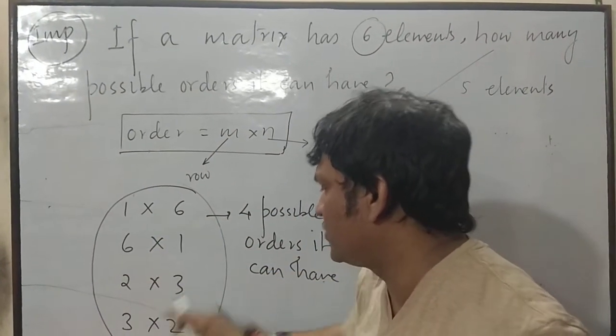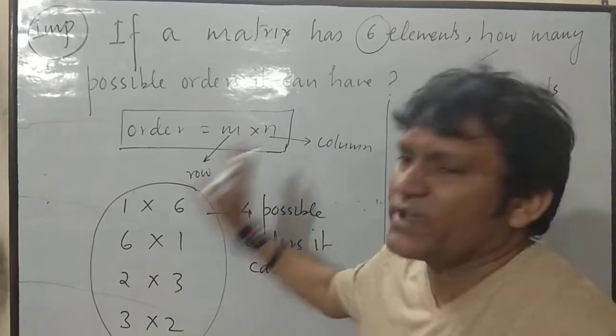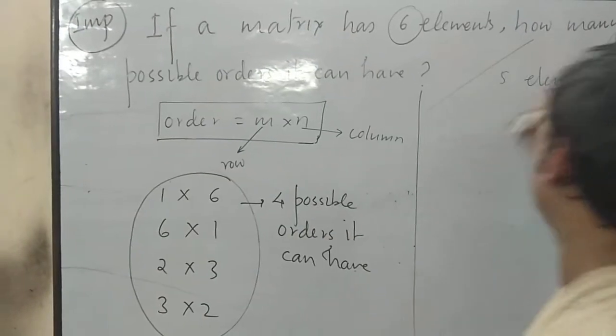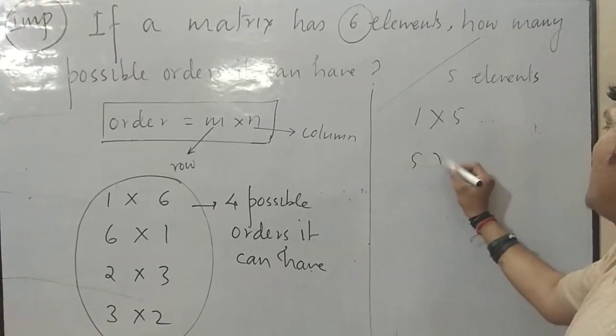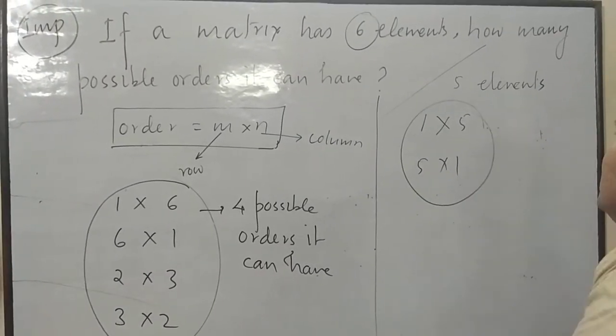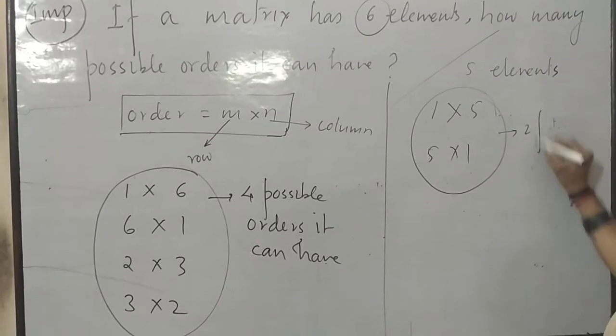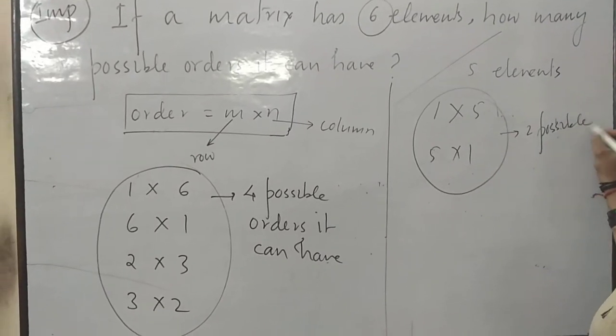1 into 6, 6 into 1, 2 into 3, 3 into 2. You cannot make 6 any other way. Same here. 5 elements you can write 1 into 5, 5 into 1. Two orders. Two possible orders. Clear?